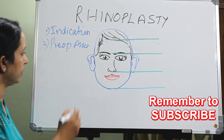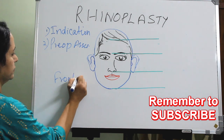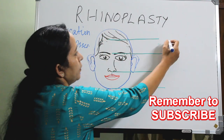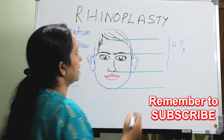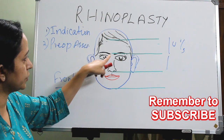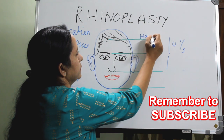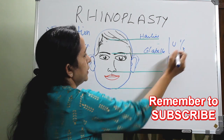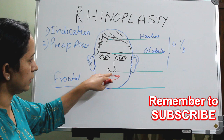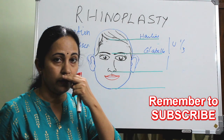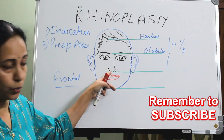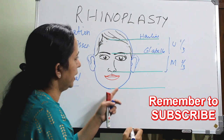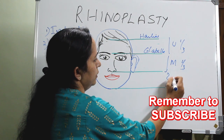In the frontal view, the face is divided into three equal thirds. The upper one-third is from the hairline up to the glabella. The middle one-third is from the glabella down to the lower border of the columella. And up to the chin is the lower one-third.